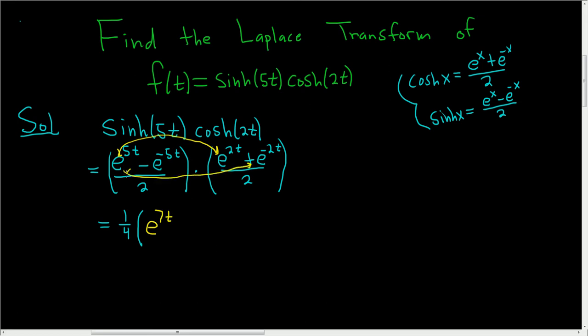And then the outside terms, it's going to be 5t plus negative 2t. So it's plus e to the 3t. And then the inside, it's going to have a minus, because there's a minus here. And it's going to be e to the negative 3t, because 2t plus negative 5t is negative 3t. And then the last is also going to have a minus. And it looks like it's going to be negative 5 plus negative 2, so negative 7t. All right, good stuff.